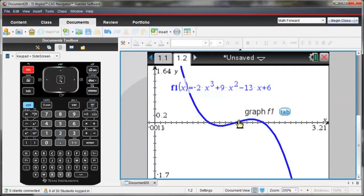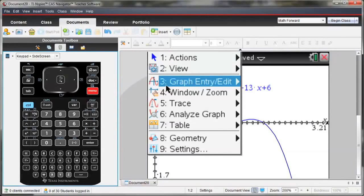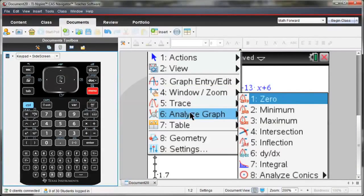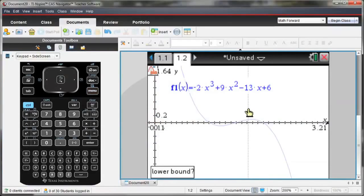Now I notice in here that I have three zeros, and I have a minimum and a maximum. So let's find what that minimum value is. I go to Menu, Analyze Graph, and then the second option there is Minimum.